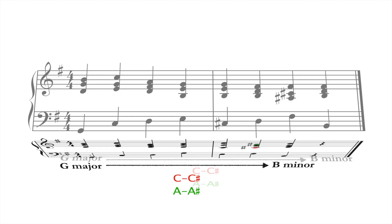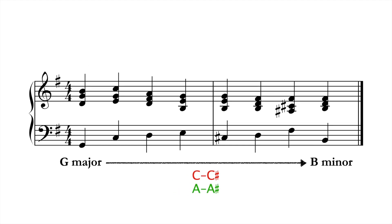In this second version of the same modulation, only one accidental changes at a time, so the new key arrives progressively rather than abruptly. The fact that there are three common tones between the chord at the end of measure one and the chord at the start of measure two makes the change even smoother.